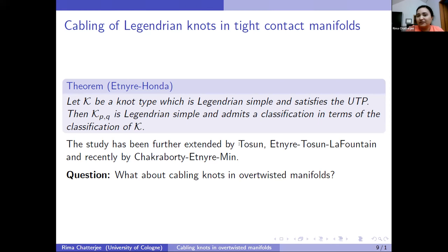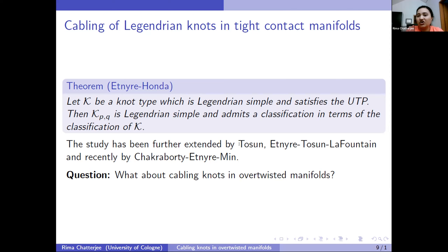We are not concerned about UTP because it only applies to tight manifolds. Whenever we are in an over-twisted manifold, there is no maximal Thurston-Bennequin number — it can be essentially infinity. So we do not have any max TB neighborhood, and UTP doesn't make any sense. In an over-twisted manifold, how does cabling work, and can we find a theorem similar to the tight case? That's the goal.